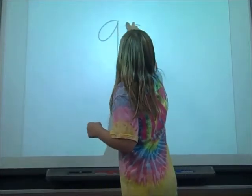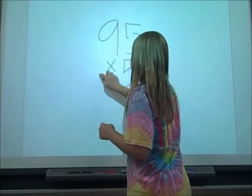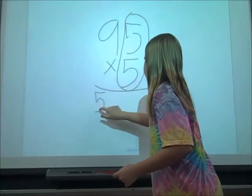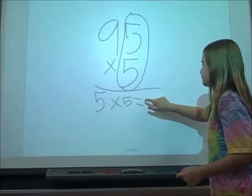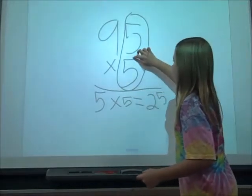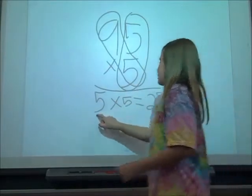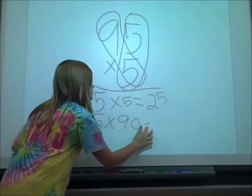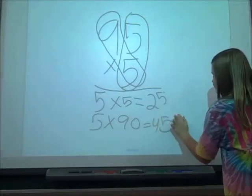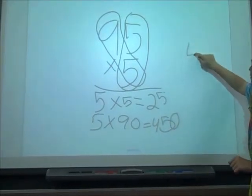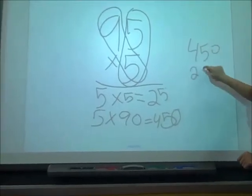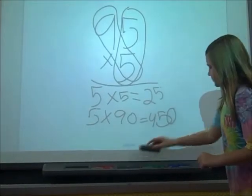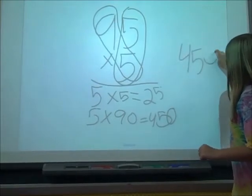We're going to take 95 times 5. First off we're going to take 5 times 5, and it equals 25. Then we're going to take 5 times 90, because the 9 is in the tens place, so 5 times 90, which equals 450. So we're going to take 450 and 25.